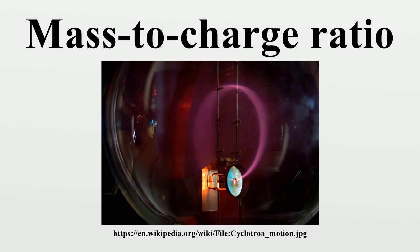Its SI units are kilograms per coulomb. Some fields use the charge-to-mass ratio instead, which is the multiplicative inverse of the mass-to-charge ratio. The 2014 CODATA-recommended value for an electron is e/me equals 1.758820024 times 10^11 coulombs per kilogram.